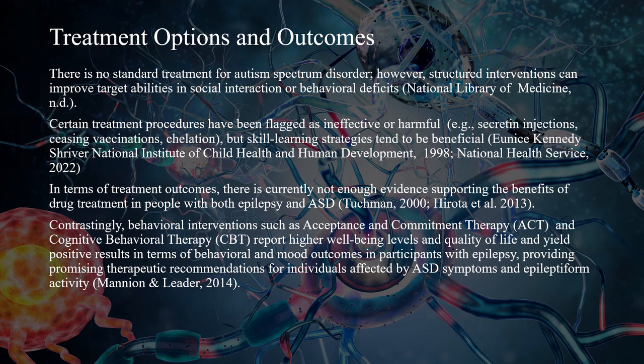However, structured interventions can improve targeted abilities for social interaction or behavioral deficits. Certain treatment procedures have been flagged as ineffective or harmful, but skilled learning strategies tend to be beneficial. In terms of treatment outcomes, there is currently not enough evidence supporting the benefits of drug treatment in people with both epilepsy and Autism Spectrum Disorder. Contrastingly, behavioral interventions such as acceptance and commitment therapy and cognitive behavioral therapy report higher well-being levels and quality of life, and yield positive results in terms of behavioral and mood outcomes in participants with epilepsy, providing promising therapeutic recommendations for individuals affected by Autism Spectrum Disorder symptoms and epileptiform activity.